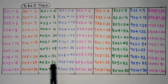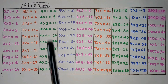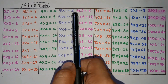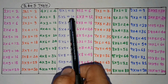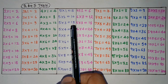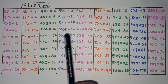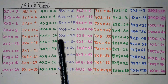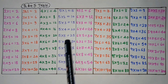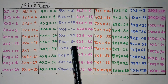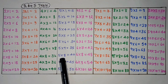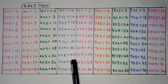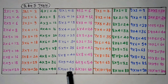4 nines are 36. 4 tens are 40. 5 ones are 5. 5 twos are 10. 5 threes are 15. 5 fours are 20. 5 fives are 25. 5 sixes are 30. 5 sevens are 35. 5 eights are 40. 5 nines are 45. 5 tens are 50.